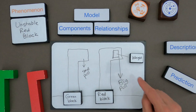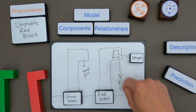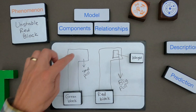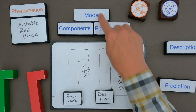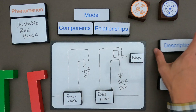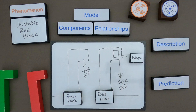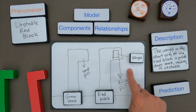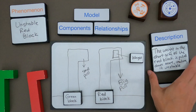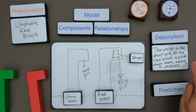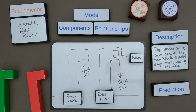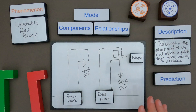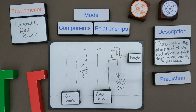On my model I'm trying to show the relationship between the weight and it being a big pull. Gravity is pulling down on it more than it's pulling on the place that doesn't have the big weight. So now I have two parts of a model: the components and the relationships. Next I have to write a description — a written description of my model. The description is that the weight in the short arm of the red block is pulled down more, making it unstable compared to the green block.